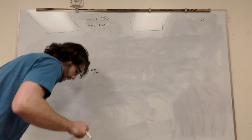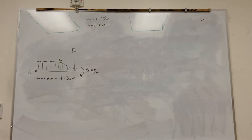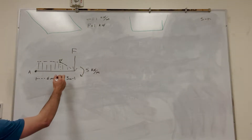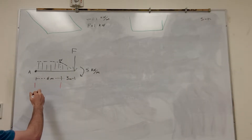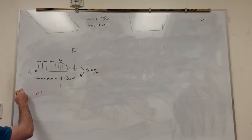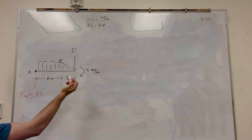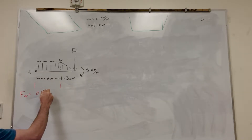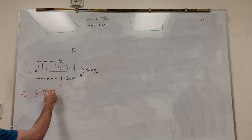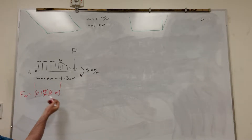We can break it into two parts. This first part here is 6 meters, so if we take that we have 0.1 kilonewtons per meter and then multiply that by 6 meters — the meters cancel — and it's just going to be 0.6 kilonewtons.